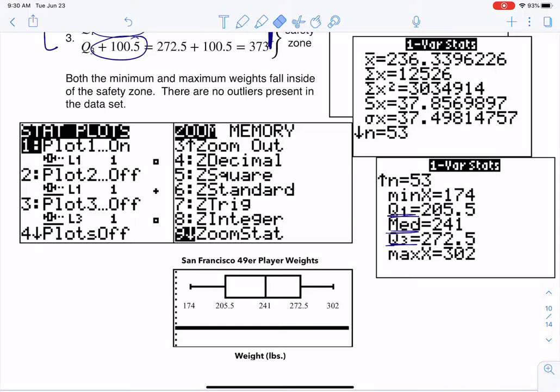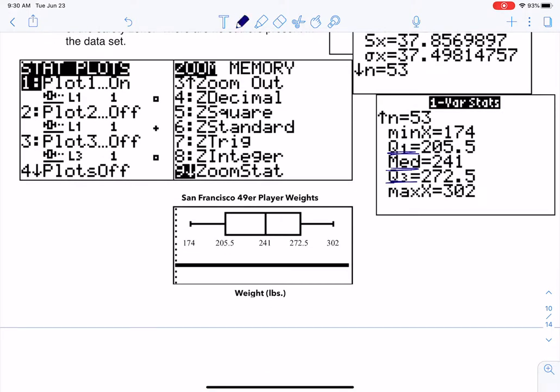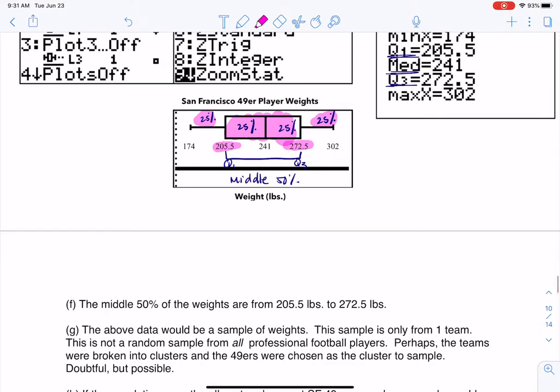So the next part, part F said, where is the middle 50% of your data? Now, box plots always do this. They take your data and break it up into 25% chunks. That's what a box plot does. It breaks it up into the quarters, the quartiles. So your middle 50% is always between Q1 and Q3. This is always the middle 50%. Because if I start looking here, this is the high quartile, this is the low quartile. This is the middle 50%. So for us, our middle 50%, the players, 50% of the players, the middle 50% of the players are between 205.5 pounds and 272.5 pounds. And that's where I'm getting those numbers.